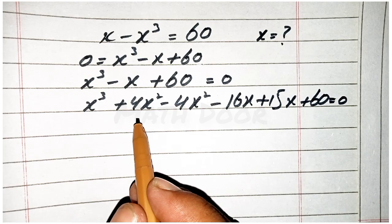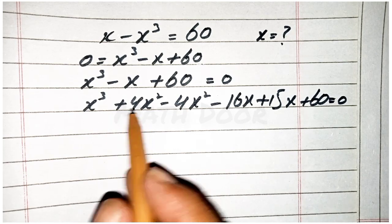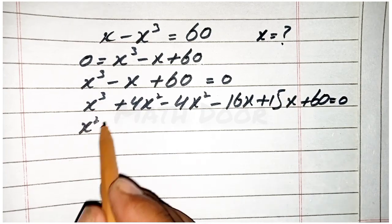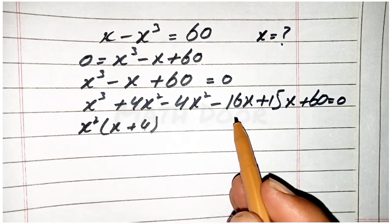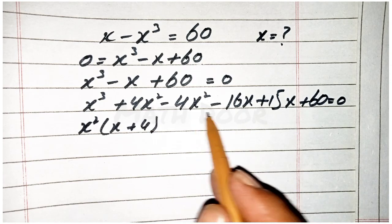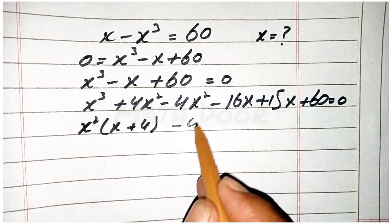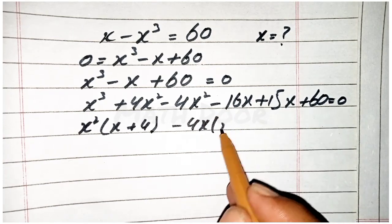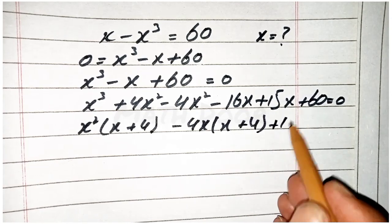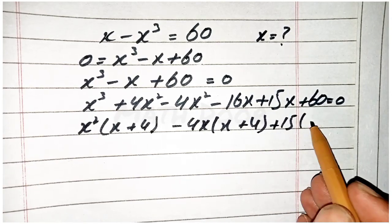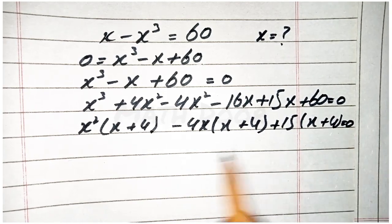Now we take x square as common from the first two terms: x squared times (x plus 4), and take minus 4x from the next two terms giving minus 4x times (x plus 4), and take 15 as common from both of these giving (x plus 4) is equal to 0.